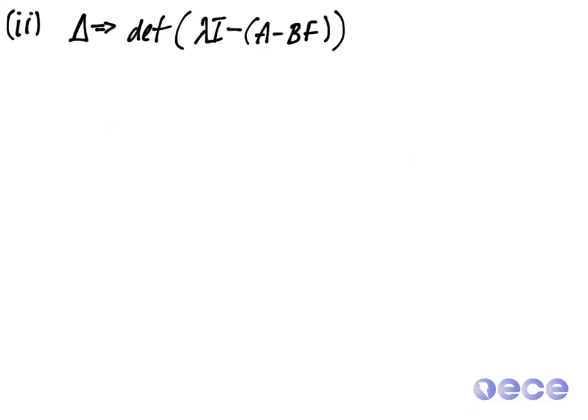So again, we're going to get to pick F in order to make our system control the way we'd like for it to control. So if we just write A minus BF here, A minus B times F is equal to minus 1 minus f1 and minus f2. Maybe we should spend a little bit more time on this so it's clear why it is that this is the case.